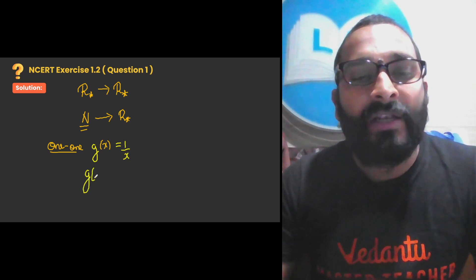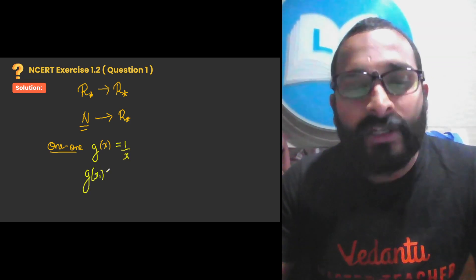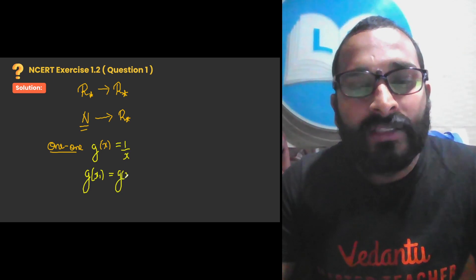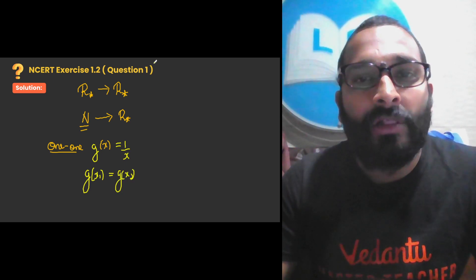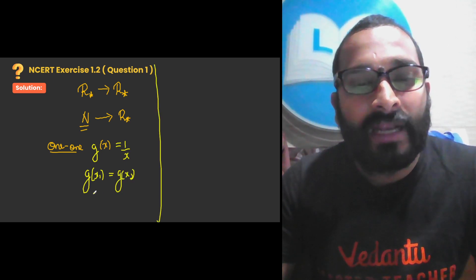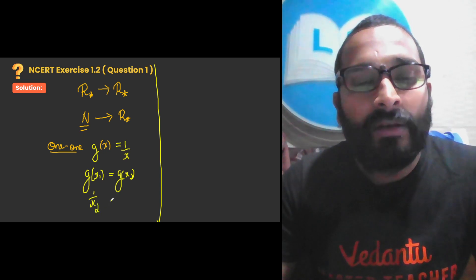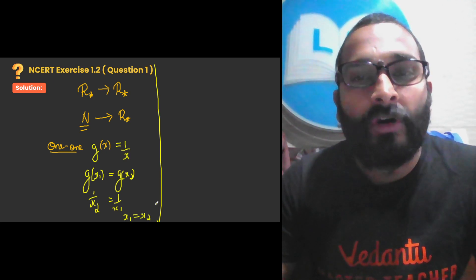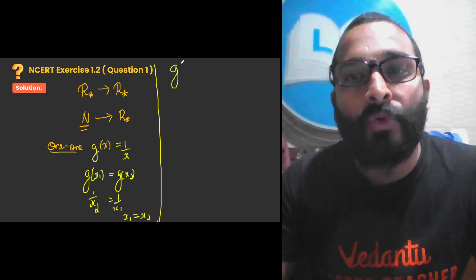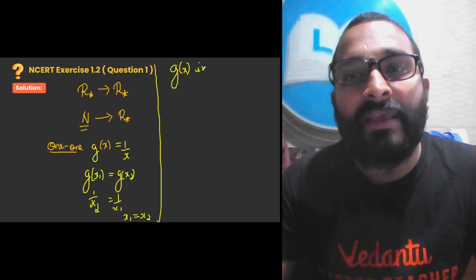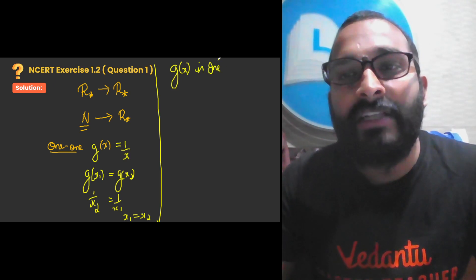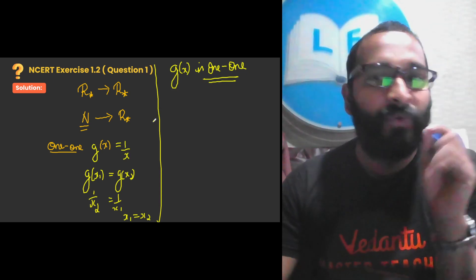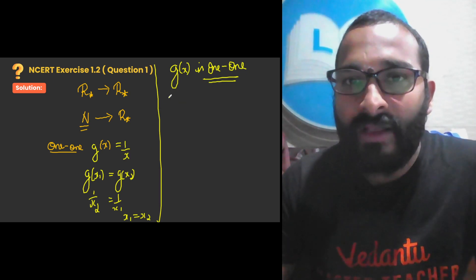Let us check whether g(x) = 1/x is one-one. As before, if g(x₁) = g(x₂), then 1/x₁ = 1/x₂, which gives x₁ = x₂. So g(x) is a one-one function.